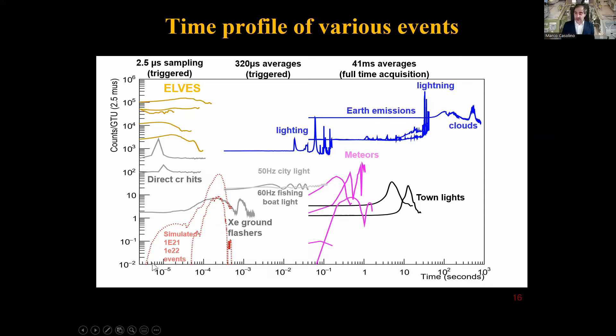If we plot the total energy time profile of the various events as a function of time, we see that Mini-EUSO can study events that are very fast like cosmic rays and ELVEs on the time scale of a few microseconds. These are all experimental data except the simulation of 10^21 and 10^22 electron volt events. We have ELVEs which are very energetic but very fast, a few hundred microseconds. Direct cosmic rays are the fastest, just a couple GTU. We sample at 2.5 microseconds, so it's a couple of frames.